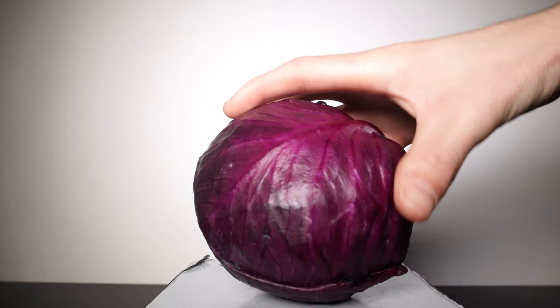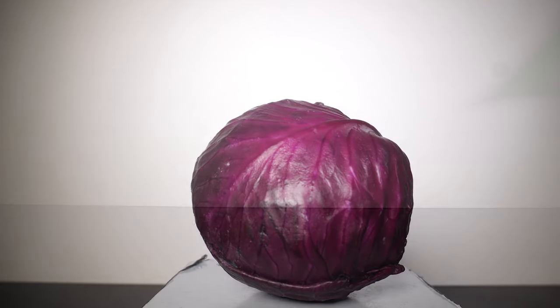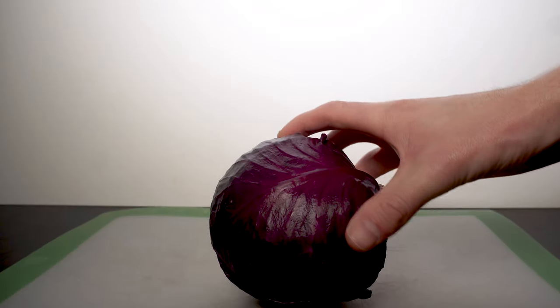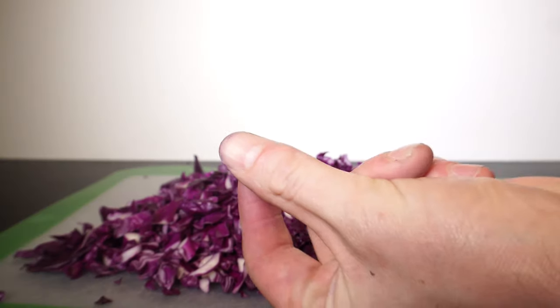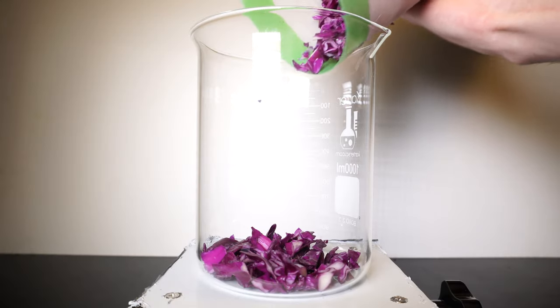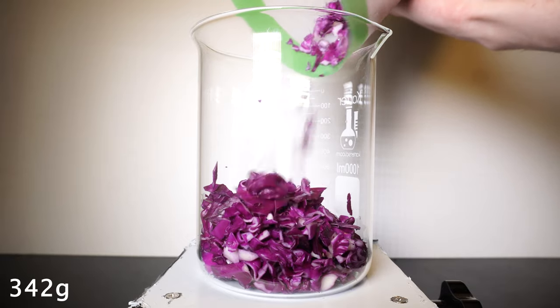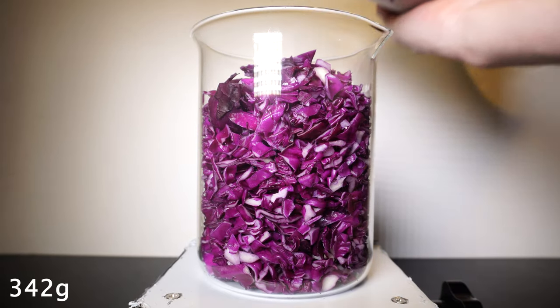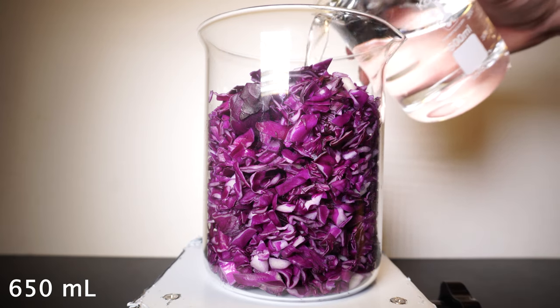The only materials we will need is a fresh red cabbage and some distilled water. The first thing we will need to do is get the cabbage in smaller pieces that will be easier to extract from. For time's sake I just do some cool video magic to chop it all up. Next I add as much cabbage as my 1 liter beaker will hold which turns out to be about 342 grams. On top of this I just add in around 650 milliliters of distilled water.